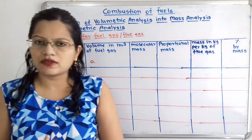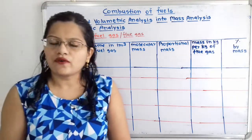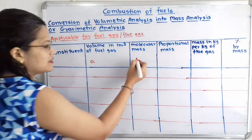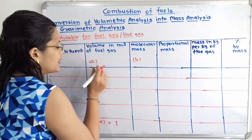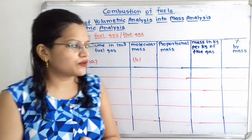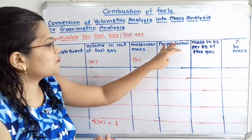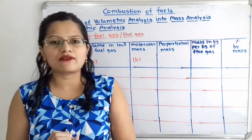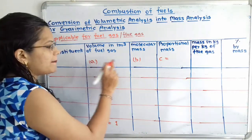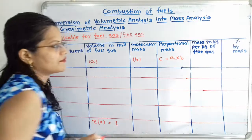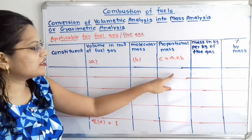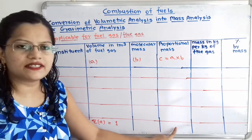The next column is molecular mass, which we call letter B. Atomic masses must be known to calculate molecular mass for each constituent. The column after that is proportional mass, which we call letter C, and it is calculated as C = A multiplied by B. So we multiply the volume fraction by the molecular mass to get the proportional mass for each constituent.